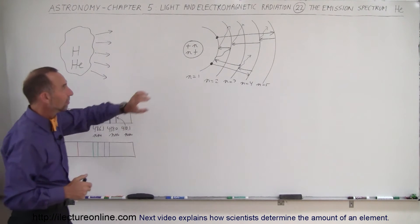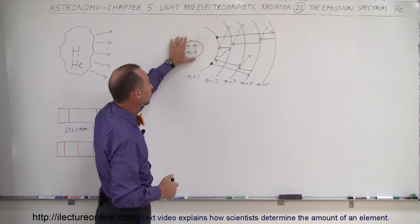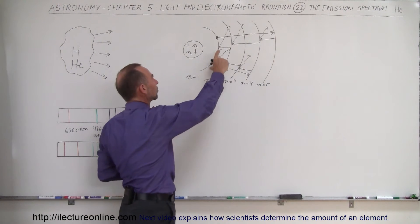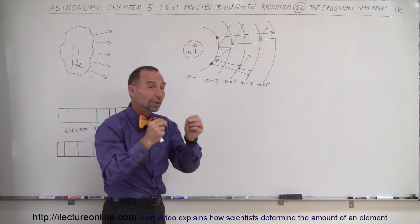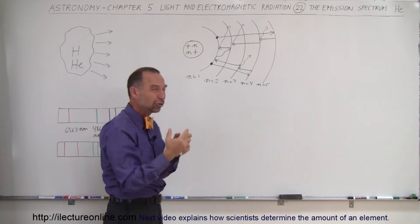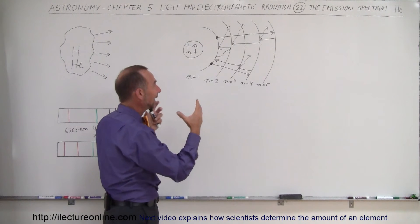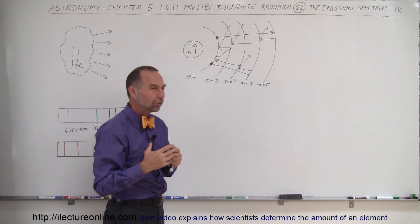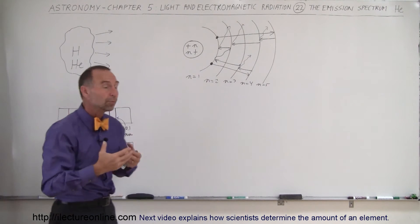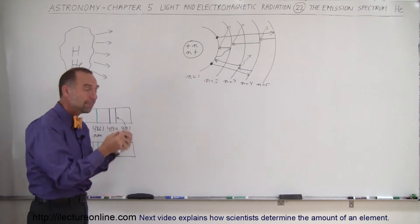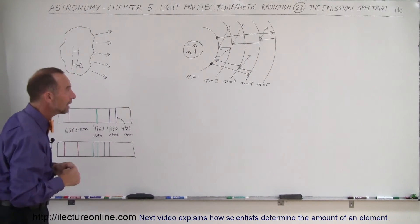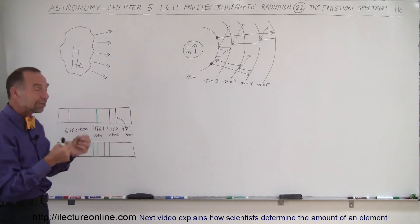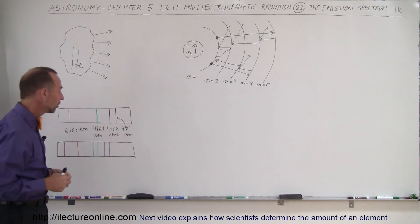Since helium has two electrons and two protons, the interaction between the electrons and the nucleus, and the interaction between each other, makes it very difficult to model the exact energy jumps on a helium atom. So it's a lot easier simply to observe and measure the wavelengths, so that we can then infer the energy difference between the orbits and the interaction between electrons and the nucleus.